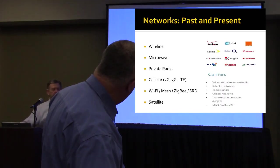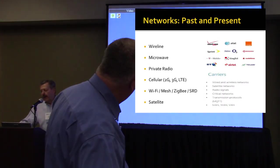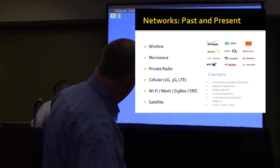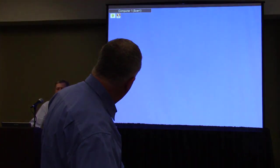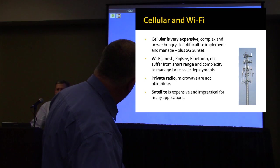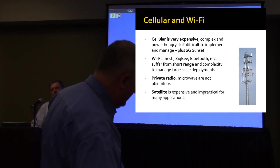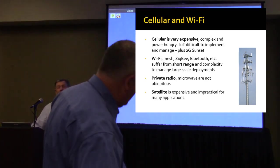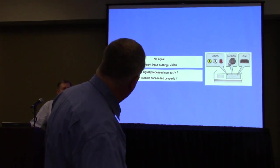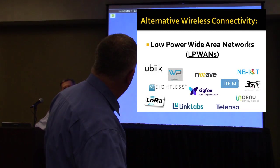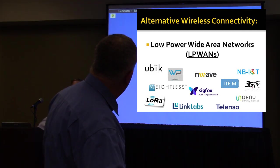In the old days we used wireline, microwave, cellular radio, Wi-Fi, and satellite. The problems with those: cellular is very expensive, Wi-Fi is very short-range, and private radio and microwave are very limited — not ubiquitous. Satellite covers a large area but it's very expensive. So there's a whole new way of doing the connectivity part called low-power wide-area networks, LP-WANs.